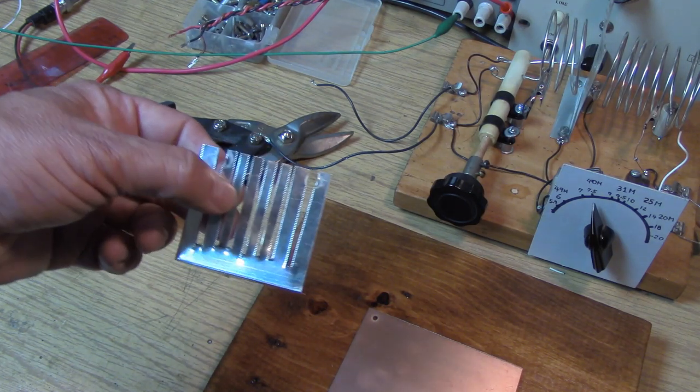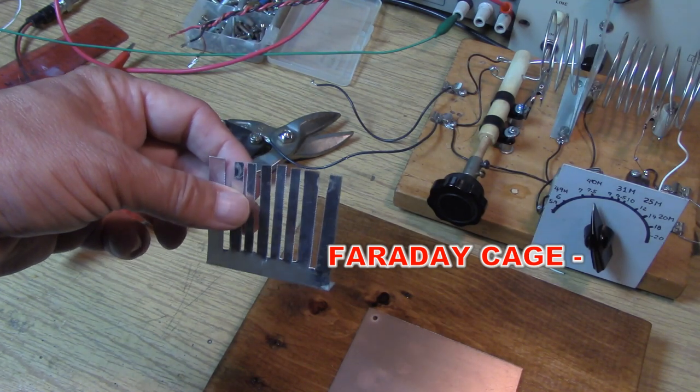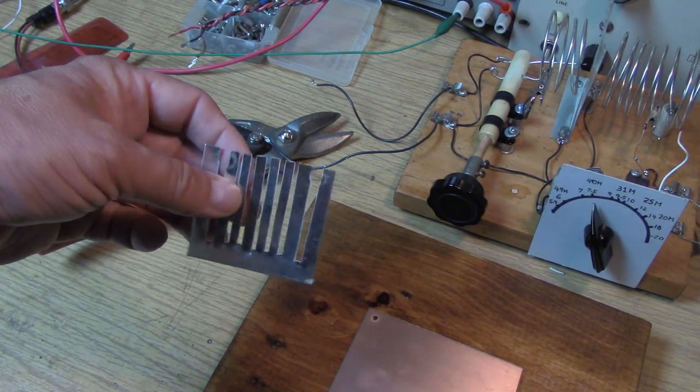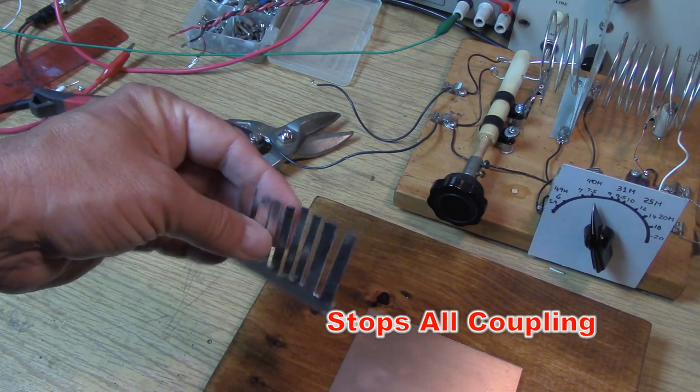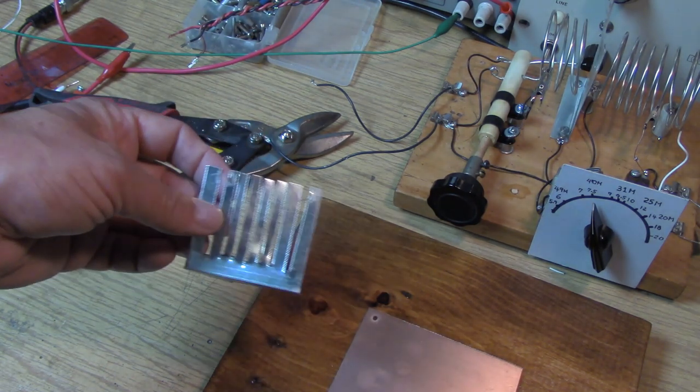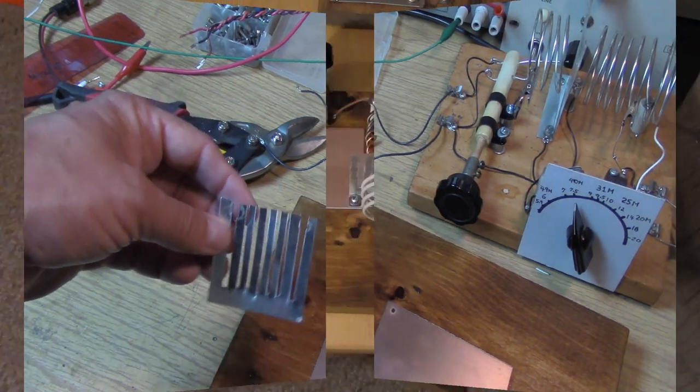We're trying to reduce the capacitive coupling and not affect the magnetic coupling. That's the secret of the Faraday shield. If we were to enclose the coils in a solid shield, we would have no coupling. We wouldn't have capacitive or magnetic coupling, but we're trying to promote the magnetic and discourage the capacitive.